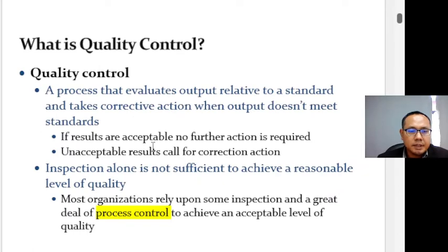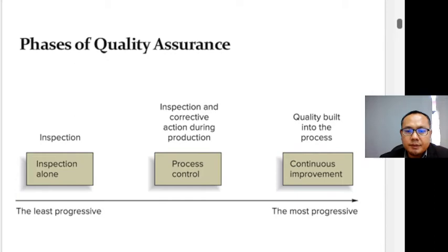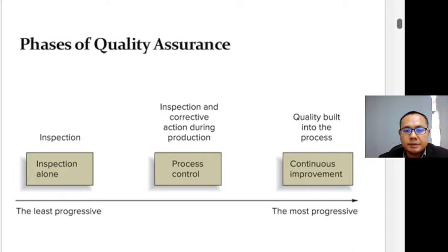From this graph, you can see that many processes occupy a middle ground involving some inspection and a great deal of process control. This figure illustrates the phases of quality assurance — from inspection alone up to continuous improvement, showing progressive approaches to quality assurance.